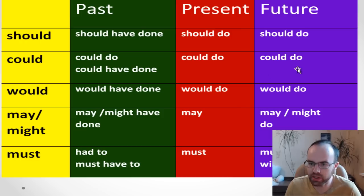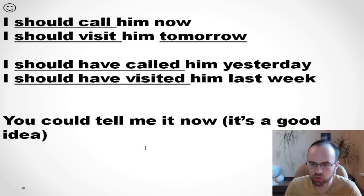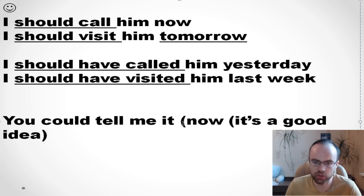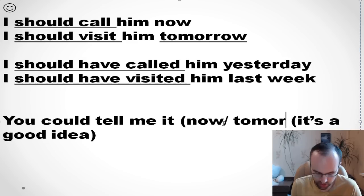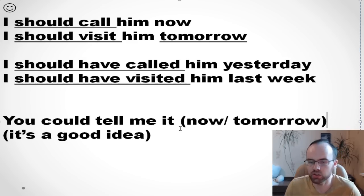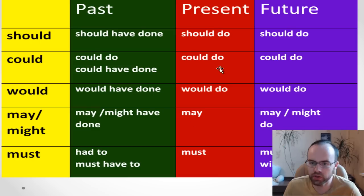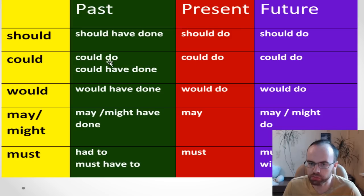It can also be about the future: 'You could tell me it tomorrow.' So we use this modal verb for the present and for the future. If you are talking about the past, you can use could plus verb, or could have done — could have plus the third form.